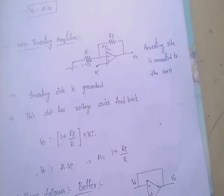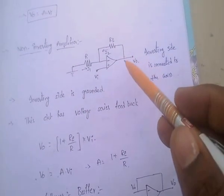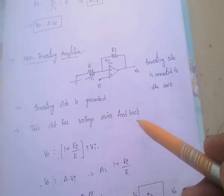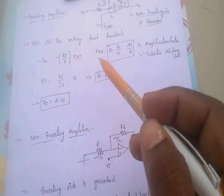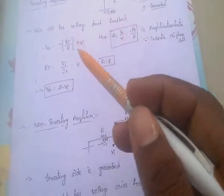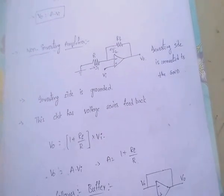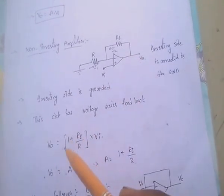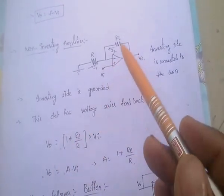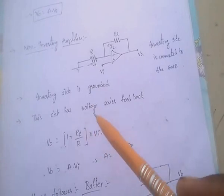This circuit has voltage series feedback. And here, V0 equals 1 plus RF by R into Vi.